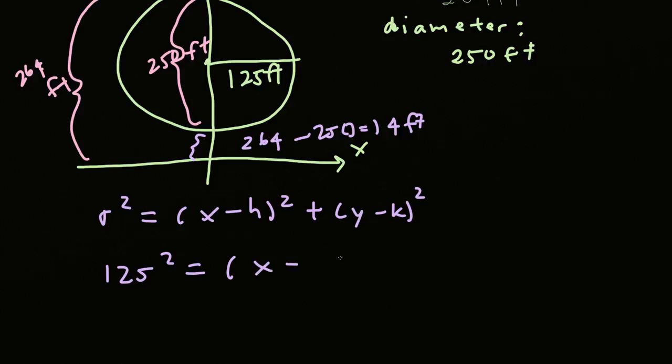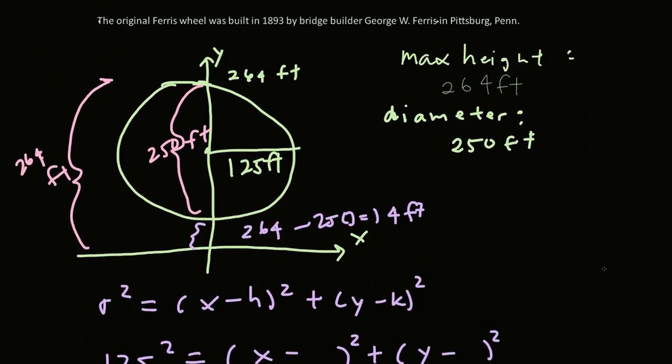125² = (x - 0)² + (y - k)². Let's find out what the center is. If the structure is 14 feet and the center is right here, and we know that from here to here is 125 feet, then for the center all we have to do is 125 feet plus the extra 14 feet, which will give us 139 feet. But this is in the y-component. What about the x-component? Well, if the center is on the y-axis, then that means the x-component is just 0. So the center is at 0 comma 139.